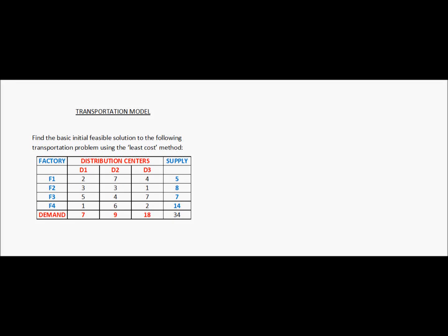Find the basic initial feasible solution to the following transportation problem using the least cost method. An organization has four factories F1, F2, F3, and F4 with a supply capacity of 5, 8, 7, and 14 units per day respectively. The same organization has three distribution centers D1, D2, and D3 with a demand of 7, 9, and 18 units per day.